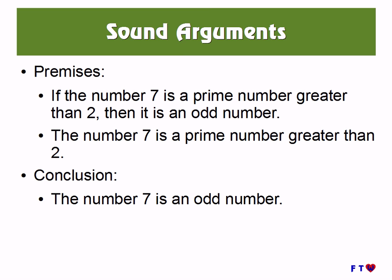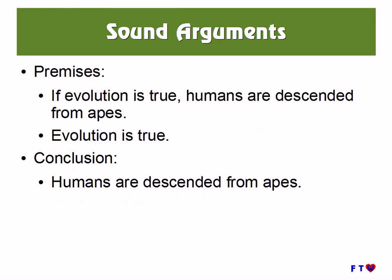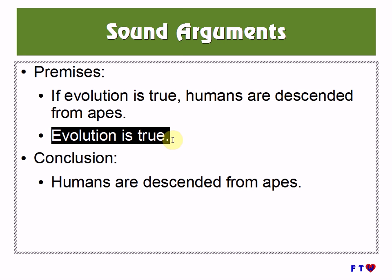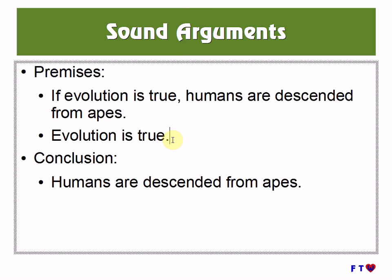But not all sound arguments are necessarily good arguments. Consider this argument — I believe it is sound. The premise is: if evolution is true, humans are descended from apes. It has the very same form as the previous argument, just with different content. But this is rather controversial. I believe evolution is true, but there are many people in the world who don't, and so they would not be convinced by this argument. A good argument is one that is more persuasive — one that can convince people — in a way that this argument fails to do.